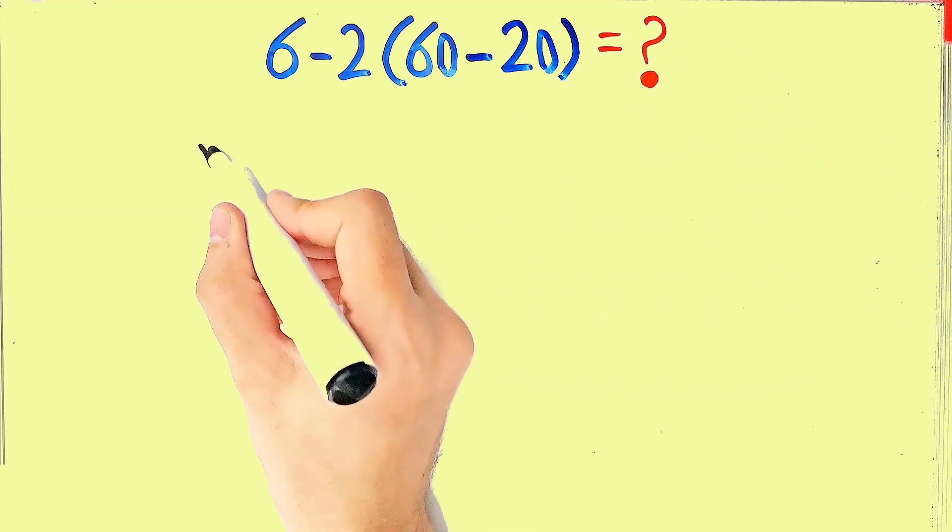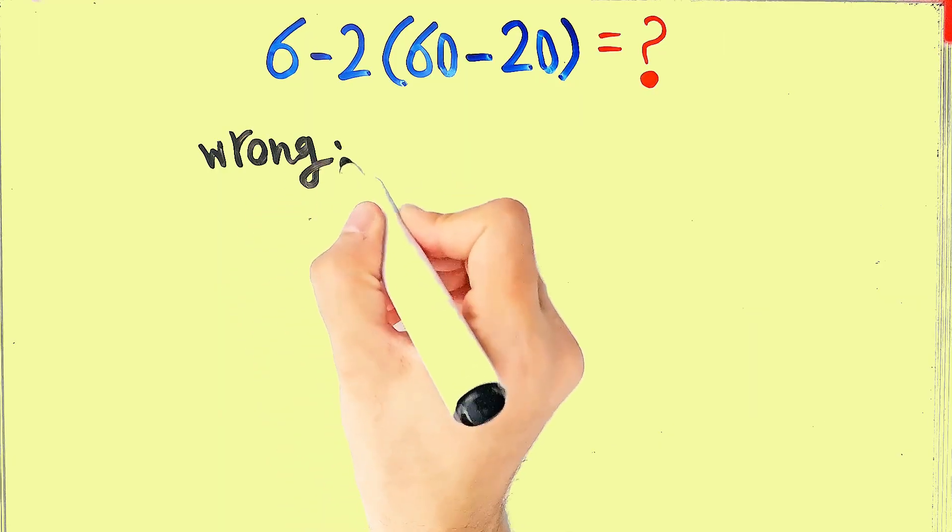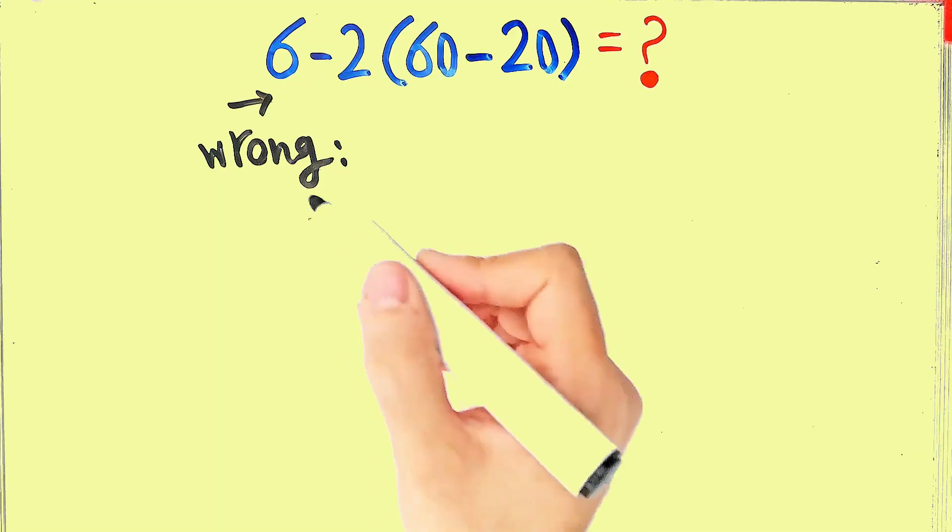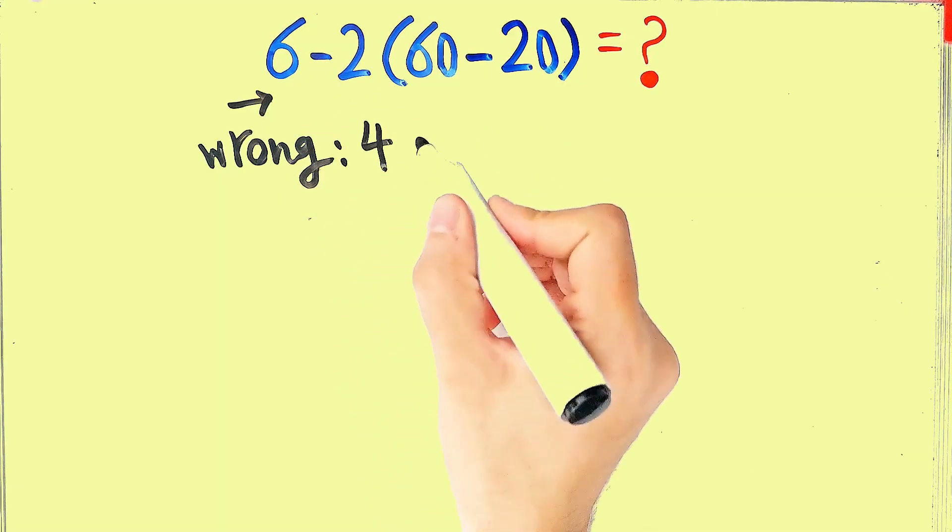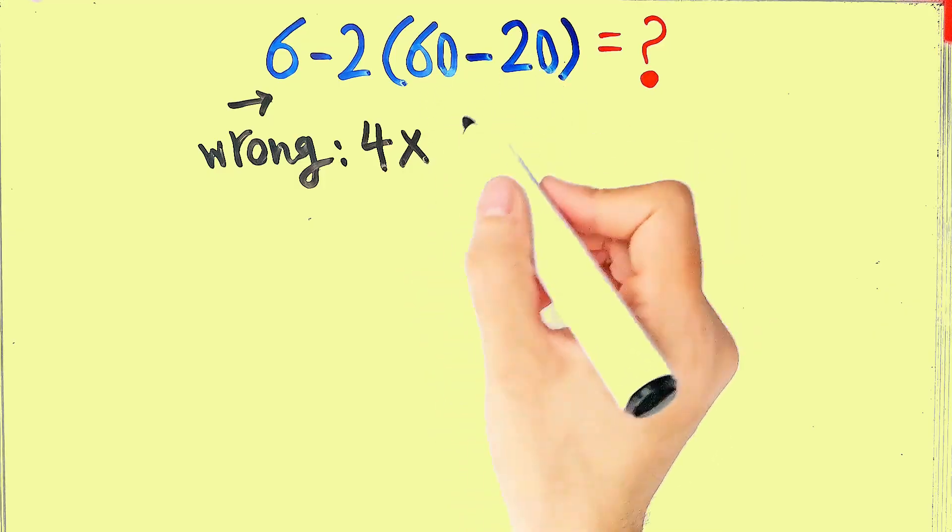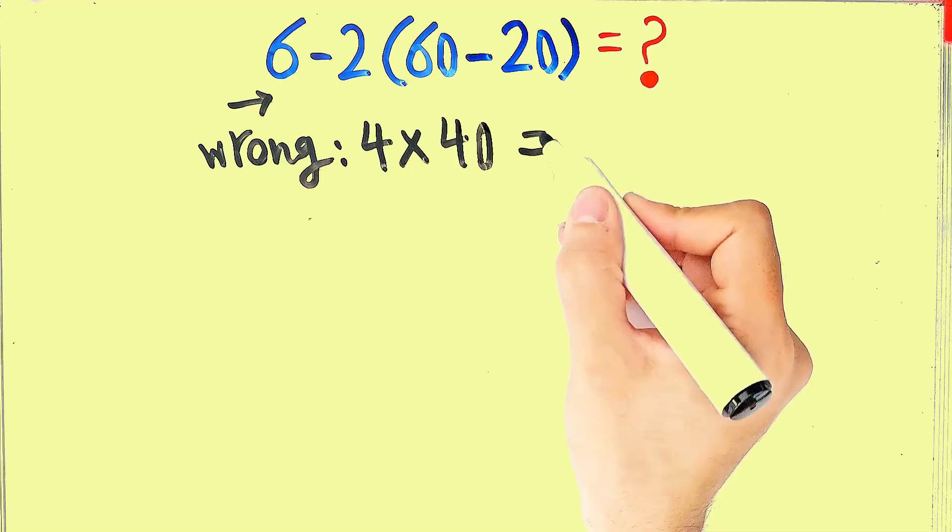In the wrong way of solving this question, some people solve this question like this. They say 6 minus 2 equals 4. 4 times 60 minus 20, which equals 40. And they say the final answer of this question equals 160.